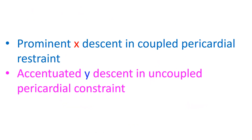In coupled pericardial constraint of cardiac tamponade, venous flow becomes predominantly systolic and the X descent in right atrial pressure becomes more prominent. In uncoupled pericardial constraint of constrictive pericarditis, venous flow is mainly diastolic and the Y descent becomes accentuated.